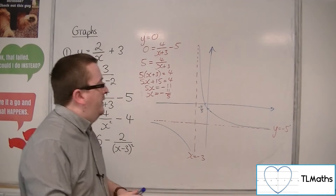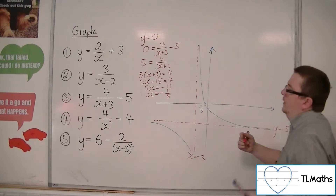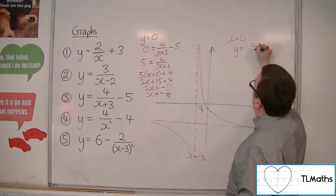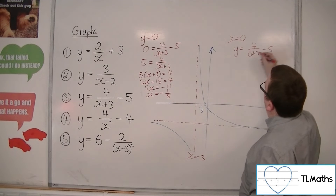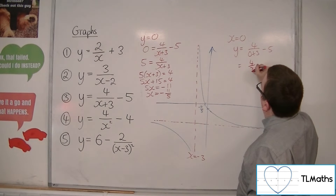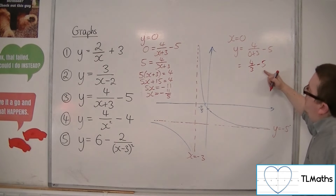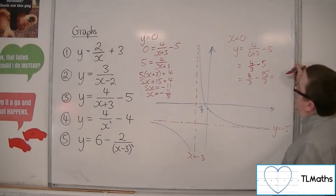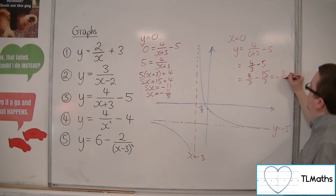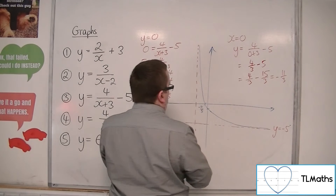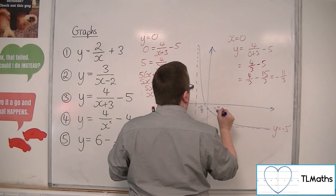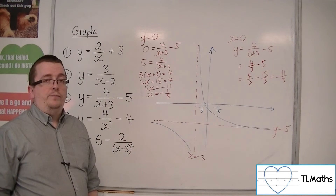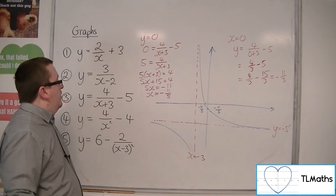To find where it crosses the y-axis, put x equals 0: y equals 4 over 0 plus 3 minus 5, which is 4 thirds minus 5. Since 5 is 15 thirds, that gives minus 11 thirds. So the curve crosses the x-axis at minus 11 fifths and the y-axis at minus 11 thirds. That's what number 3 must look like.